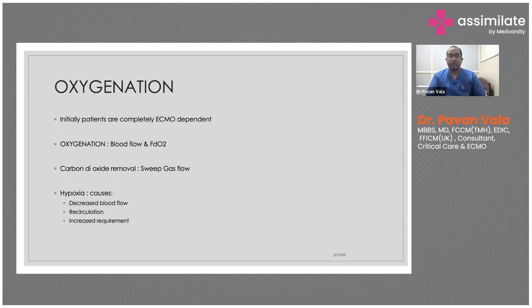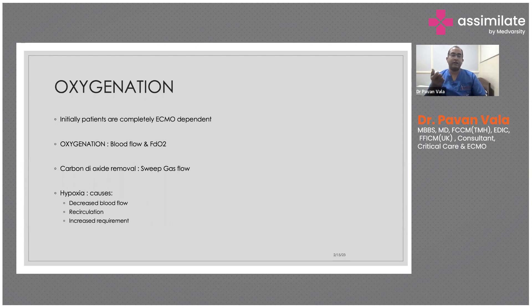Initially when placed on ECMO, the lungs aren't working at all so all gas exchange is done by the machine. To increase oxygenation on the machine, you increase blood flow — starting around 4 liters per minute and increasing if needed. CO2 removal depends on sweep gas flow, which on the blender is analogous to minute ventilation on a ventilator. So sweep gas flow is what drives carbon dioxide removal.